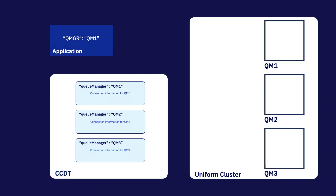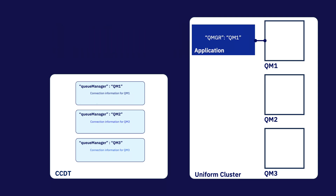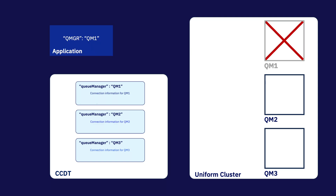By populating a CCDT with the channel definitions for all the queue managers in the uniform cluster, applications will have all the information that they need to connect to any queue manager that they're rebalanced to. However, it's not enough to just have channel definitions for each queue manager. If an application specifies that it wants to connect to QM1 using a CCDT which contains only channel definitions for the individual queue managers, it would be able to do so provided that QM1 is available. However, if QM1 became temporarily unavailable, the application would not be able to connect to it or any other queue manager in the uniform cluster.